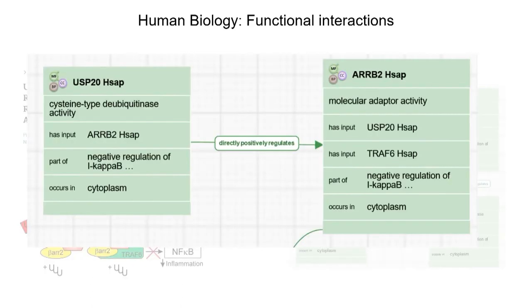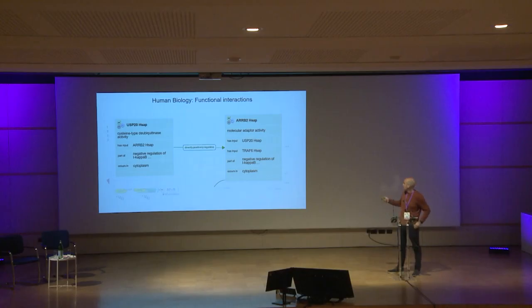Here is the corresponding GoCam with four different activities linked together. Zooming in: you have the USP20 deubiquitinase activity acting on beta-arrestin-2, which is part of the negative regulation of NF-κB and occurs in the cytoplasm. This directly positively regulates the molecular adaptor activity of beta-arrestin-2, which has as input USP20 and TRAF6, meaning it adapts these two proteins — and this is also part of the negative regulation of NF-κB.